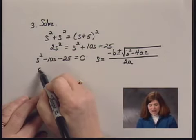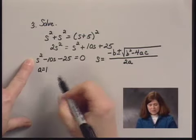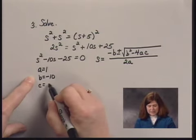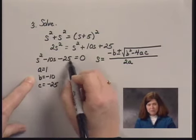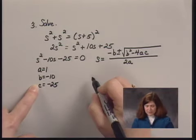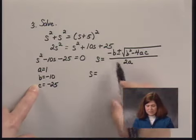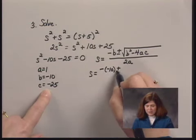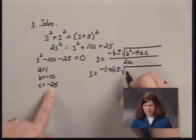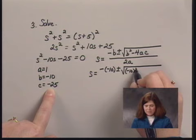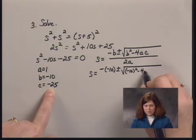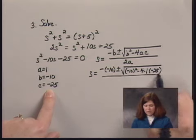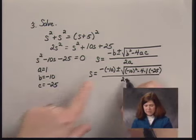Here, A is 1 because S squared is 1 times S squared. B is negative 10 from the negative 10S term, and C is negative 25 from the remaining term. Substituting in, I have S equals the opposite of negative 10, plus or minus the square root of negative 10 squared minus 4 times A times C, all over 2 times A, or 2 times 1.